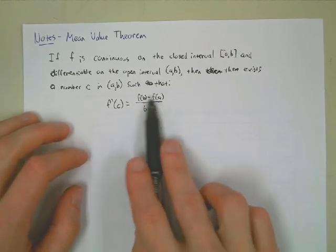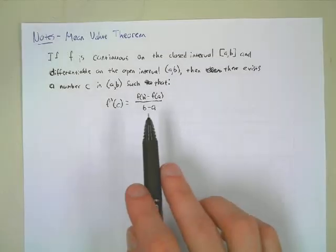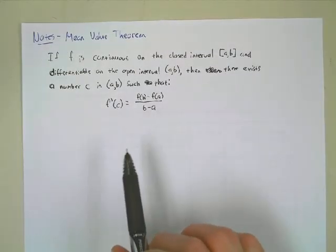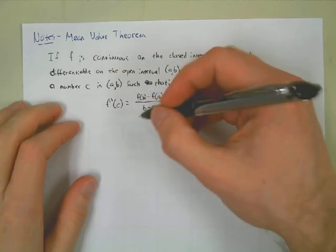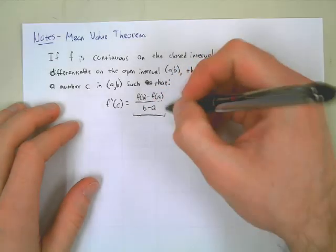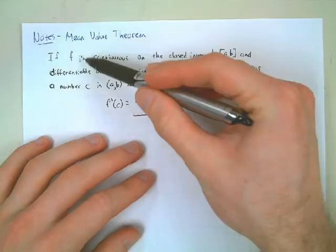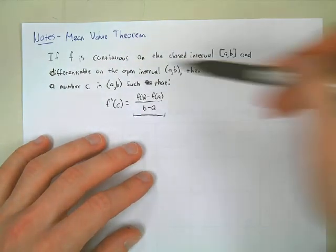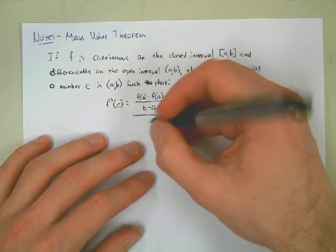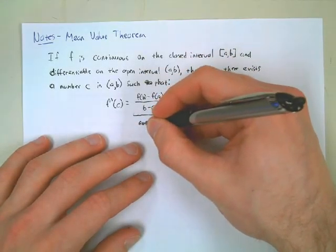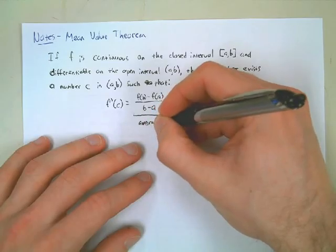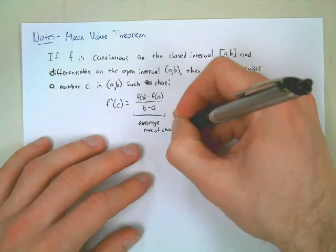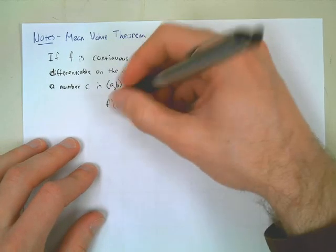What is the slope formula, and what do we use the slope formula to find? The average rate of change. So the mean value theorem basically says: if F is continuous on the closed interval [A, B] and differentiable on the open interval (A, B), then there exists a number C in (A, B) such that the average rate of change equals the instantaneous rate of change.